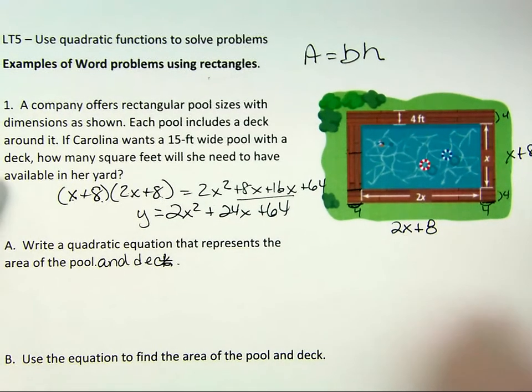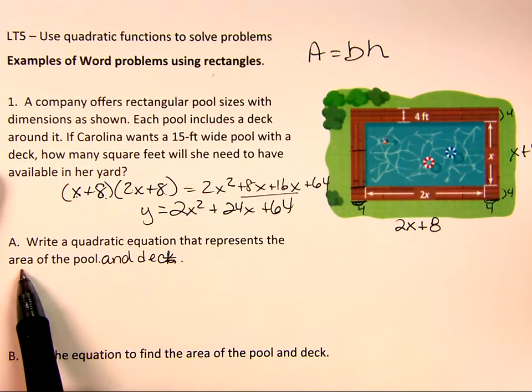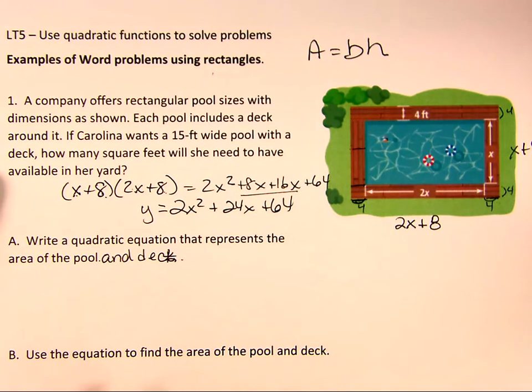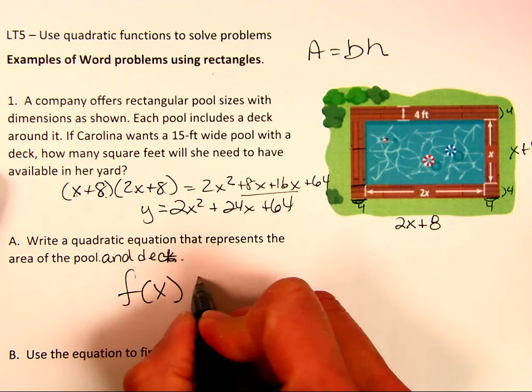That's what's nice about an equation like this, is if this switches a little bit, we still have this same ratio, and we can plug in the number. However, we don't have to do all the math every time. So we just wrote an equation that represents the area around the pool and the deck together. And now it says, use the equation to find the area.